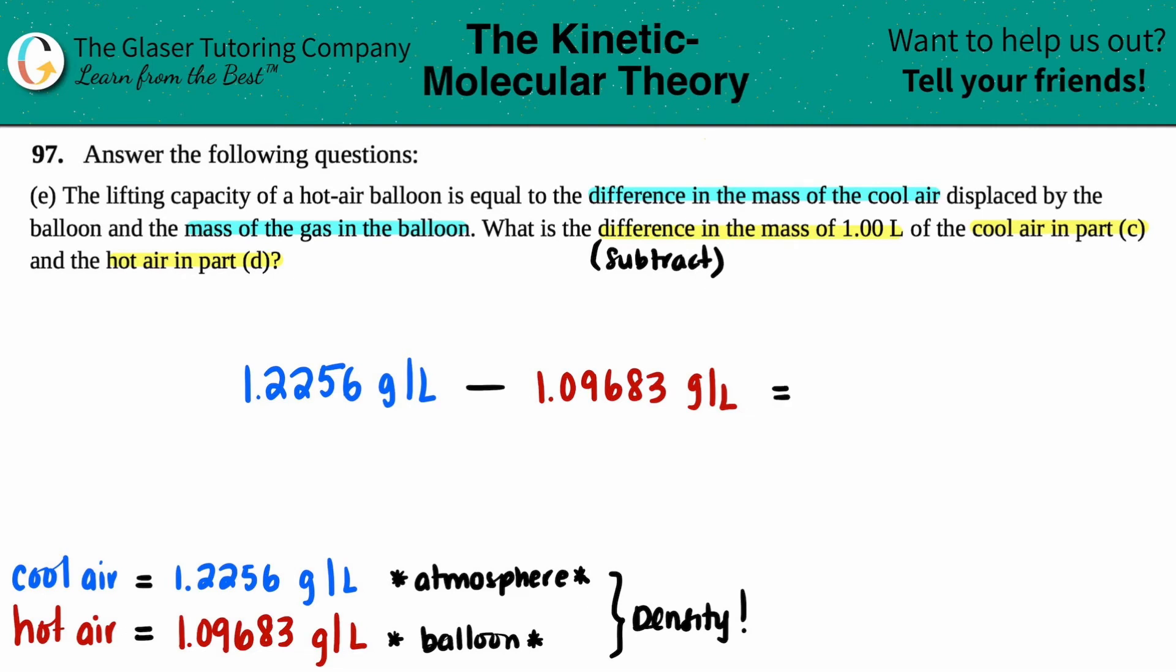Let's see, 1.2256 minus 1.09683, I get roughly, I guess we'll cut it off after, I guess we'll do four sig figs. 0.1288 if you round, right? It's 0.1287, but you know, technically since this one has only four sig figs after the decimal, technically you should have four sig figs after here.